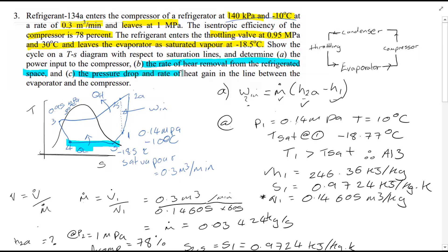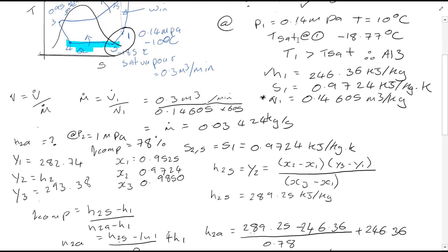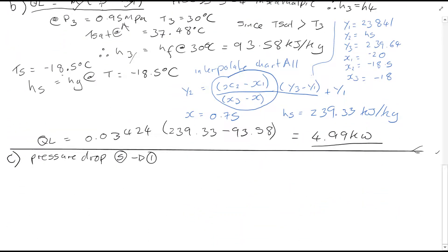...and rate of heat gain in the line between the evaporator and the compressor. So that's between here and here. So we're interested in this region here between point 5 and point 1. So moving down, of course, the pressure drop between point 1 and point 5, the change in pressure, of course, is simply equal to P₅ minus P₁. So we need to interpolate to find P₅.